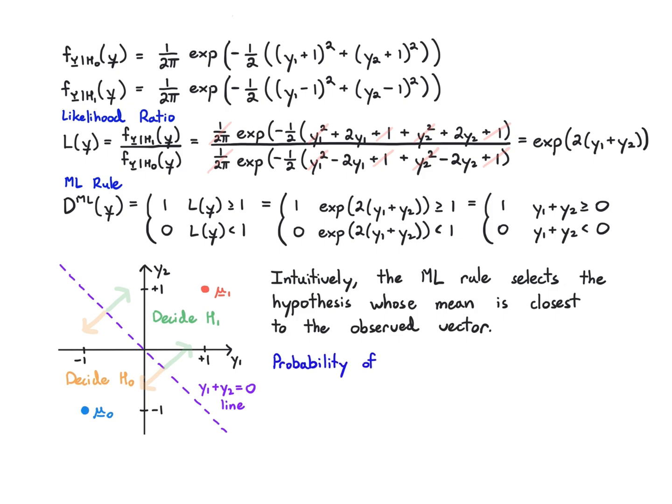So the probability of error in this case, we're not going to work it out, but you could work it out using the following fact: y1 plus y2 is itself Gaussian under both H0 and H1 because it's a linear function of Gaussians or a linear transform of a Gaussian vector. So you could work out the parameters of the Gaussian y1 plus y2, and then you could figure out when is it above zero with what probability and when is it below zero with what probability, and that would be the probability of error.